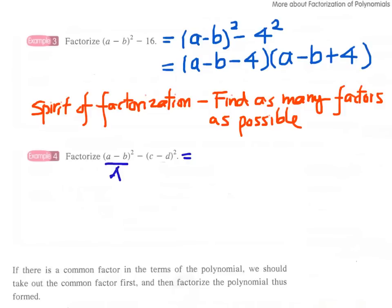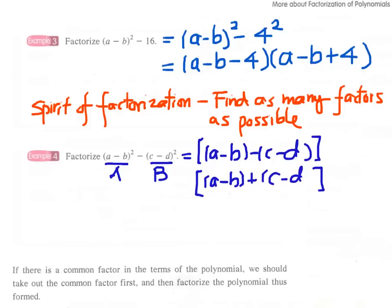This is our a and this is our b. We have a minus b times a plus b. Therefore, the first factor will be a minus b minus c minus d, and then we add another bracket. The second factor will be a minus b plus c minus d.